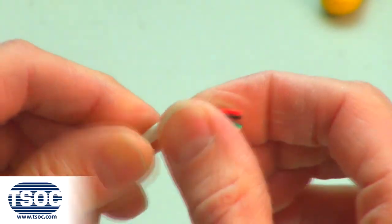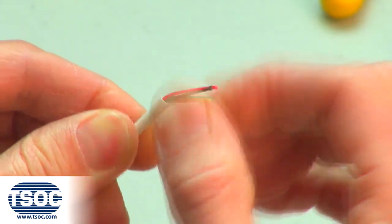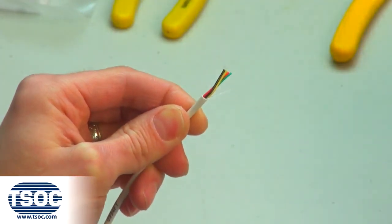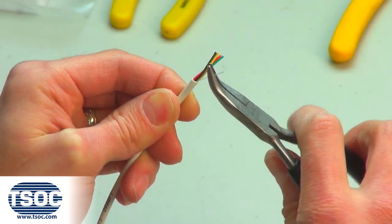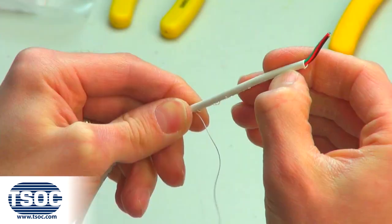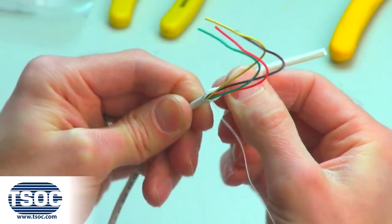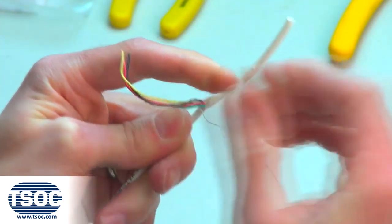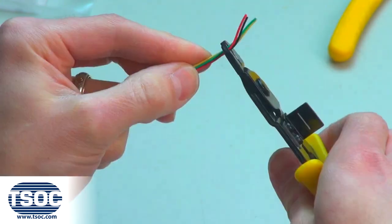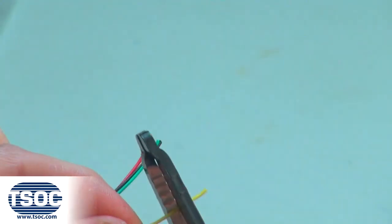Step two: remove the cable jacket exposing the four insulated conductors and nylon thread pull string. Use the needle nose pliers and pull string to expose the required length of wire. Remove the cable jacket and pull string using the cable prep tool.